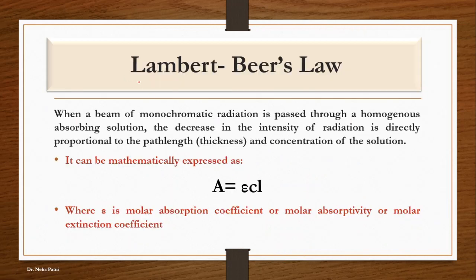Going to the final derivation — Lambert-Beer's law. Combining both expressions, we get the final expression: if you allow a monochromatic radiation to pass through a homogeneous solution, the decrease in intensity of radiation — the absorbance — is directly proportional to both concentration and path length. Path length was given by Lambert's and concentration was given by Beer's. Epsilon is nothing but a constant that gives how well a particular substance is absorbing the radiation — it is the molar absorption coefficient or molar absorptivity or molar extinction coefficient.